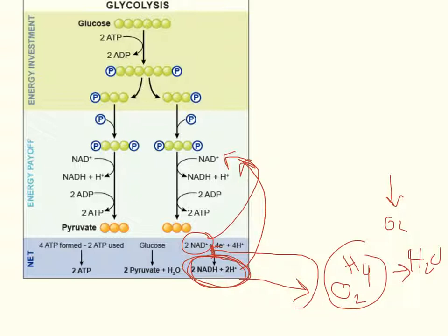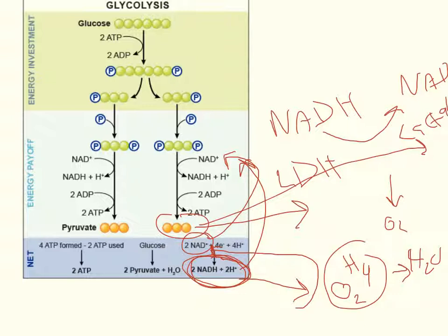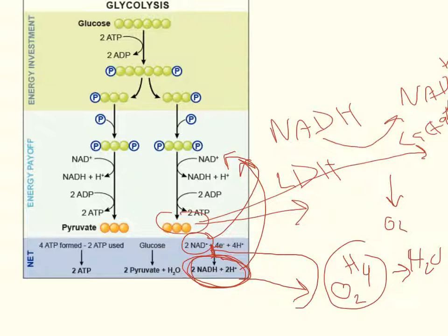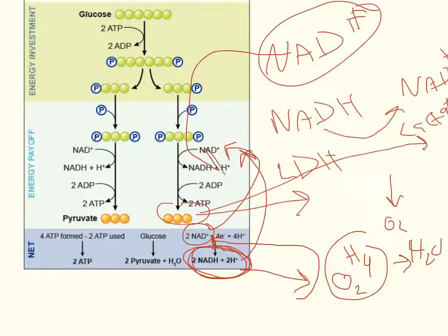Whenever this happens, what your body does is it will take the pyruvate, and through an enzyme called lactate dehydrogenase, it will take an NADH and convert it into NAD+, and it will turn the pyruvate into lactate. So you get lactate and NAD+. And then with that newly generated NAD+, you can go back through glycolysis again.